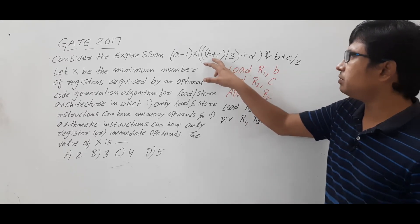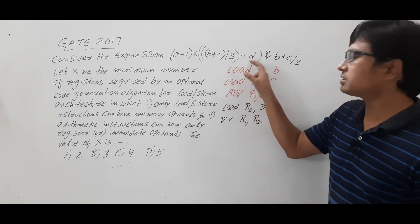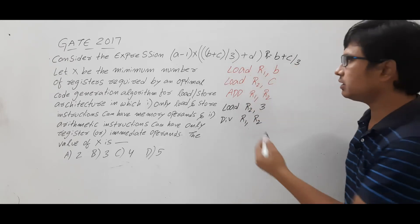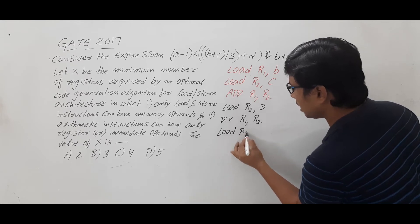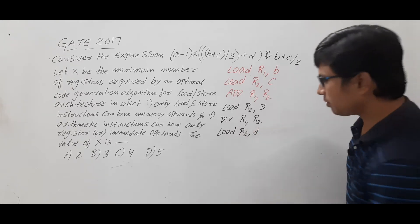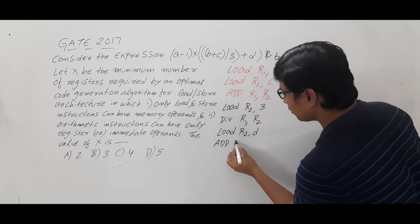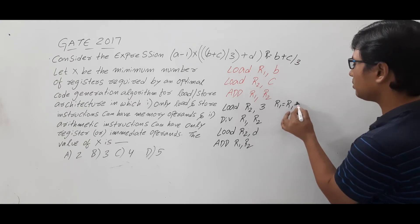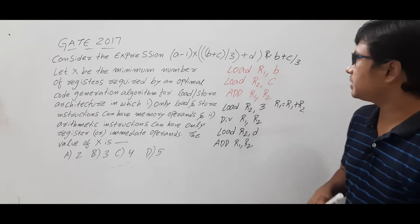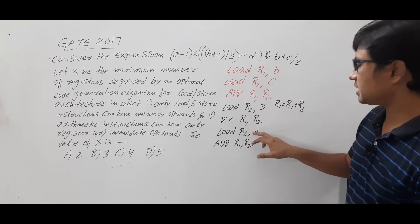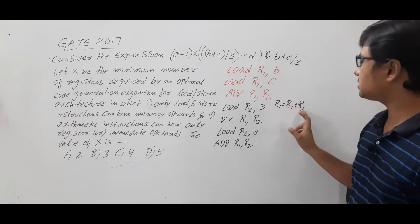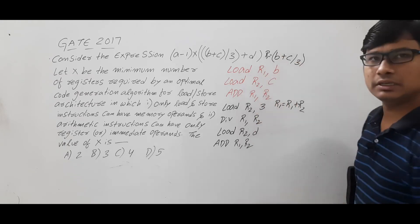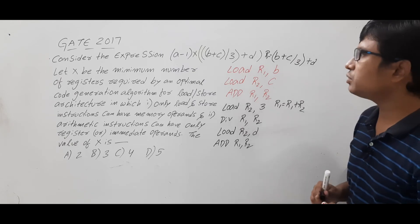Next I need to perform (b plus c by 3) plus d. I already have r1 holding (b plus c) / 3, so I will load the d value into register r2, then perform ADD r1, r2, which is r1 = r1 + r2. r1 holds (b plus c) / 3 and r2 holds d, so the result is (b plus c) / 3 + d, stored in r1.